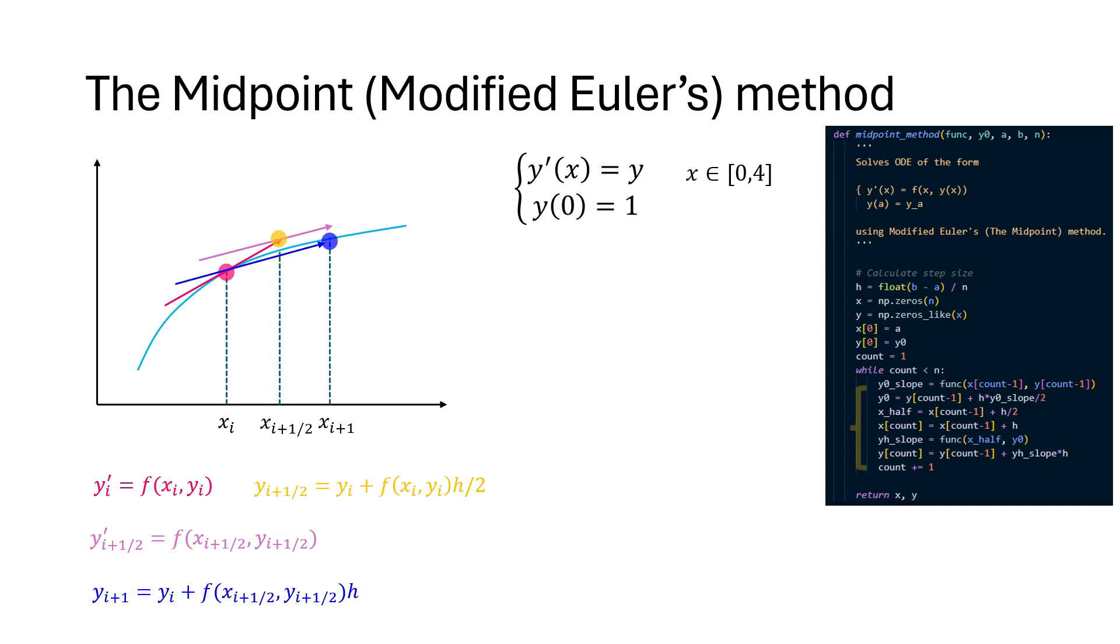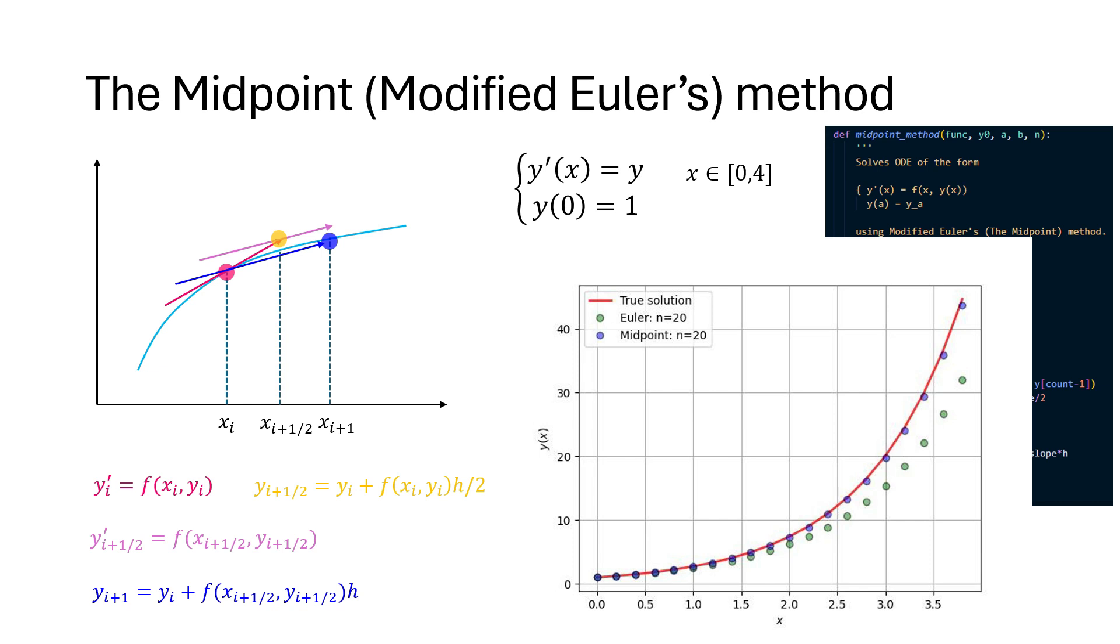And like Hune's method, we can see the modified Euler's method, which is the midpoint method in this case, is more accurate than Euler's method for the same step size.